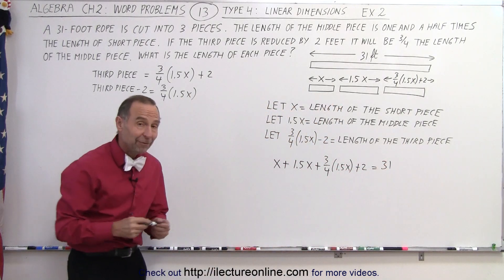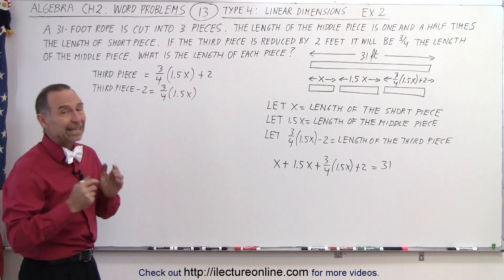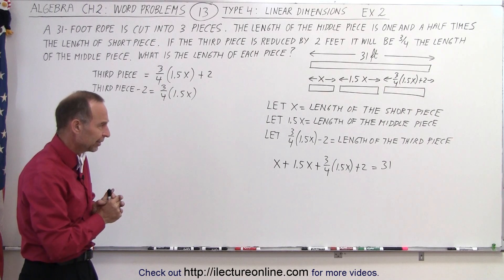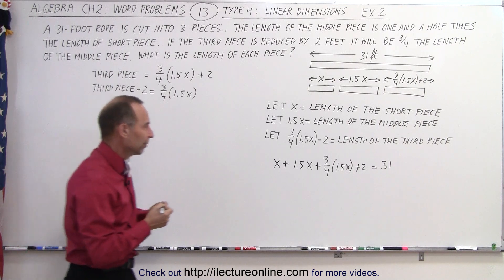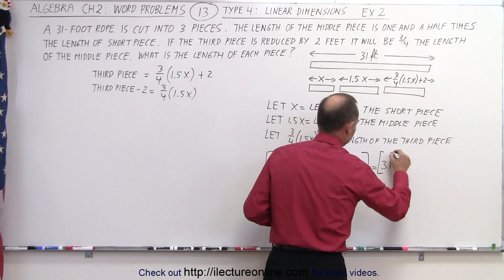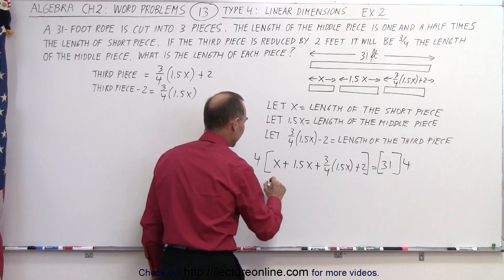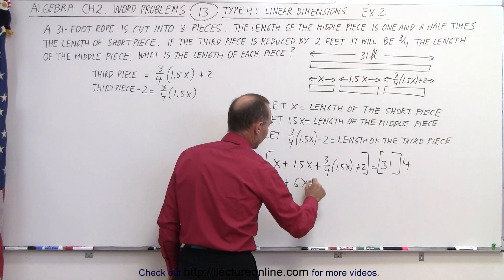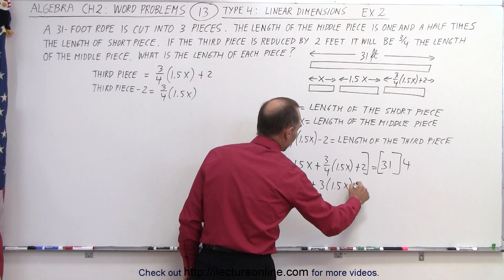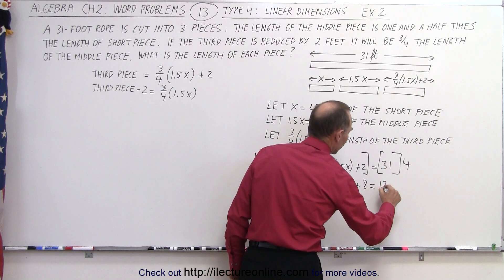We have a problem with both decimals and fractions. Let's first get rid of the fraction by multiplying both sides by four. When we do that, we get 4X plus 6X plus three times 1.5X plus four times two, which is eight, equals 124.